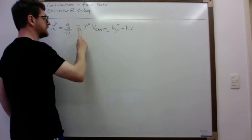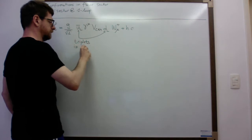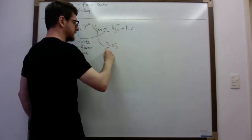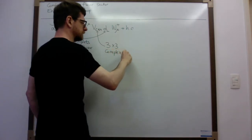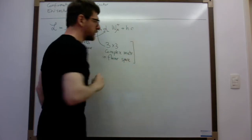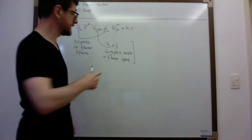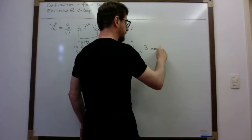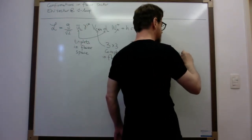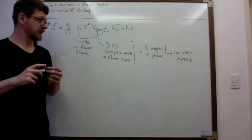Now, this U and this D are triplets in flavor space. And as a consequence, the CKM matrix — remember it's a three-by-three complex matrix in flavor space — as we saw, we solved this computation in two different ways, actually counting how many phases we can define away using symmetries. This matrix depends on three angles and one phase. In addition, we have also seen that it must be a unitary matrix. So these are the predictions of the standard model in the flavor sector.